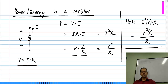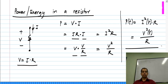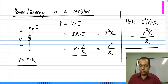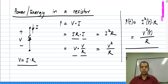One thing we can notice is that because it involves the square of either the current or the voltage, and the voltage and current themselves are real, the power delivered to the resistor is always positive. The resistor always absorbs power. That is very easily seen from this expression for power, proportional to the square of the current or square of the voltage.